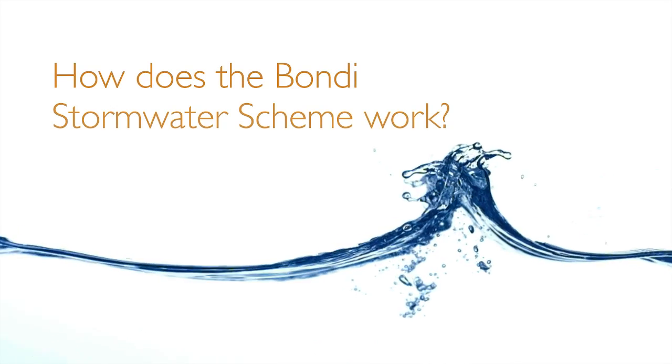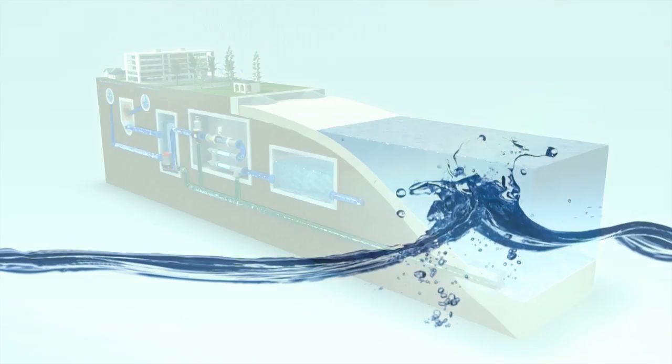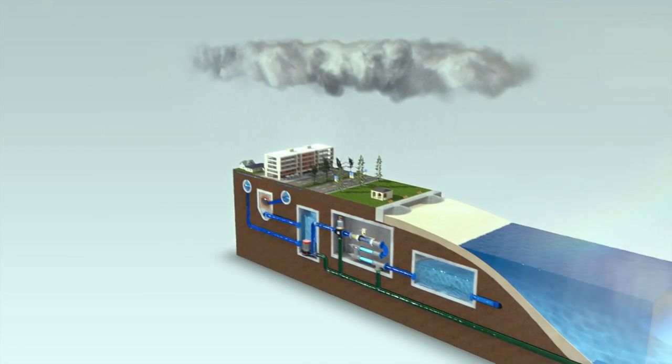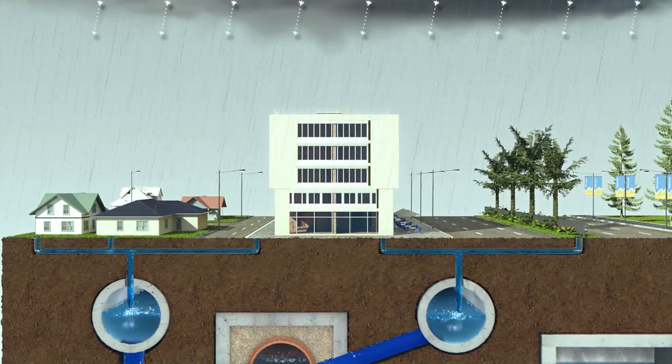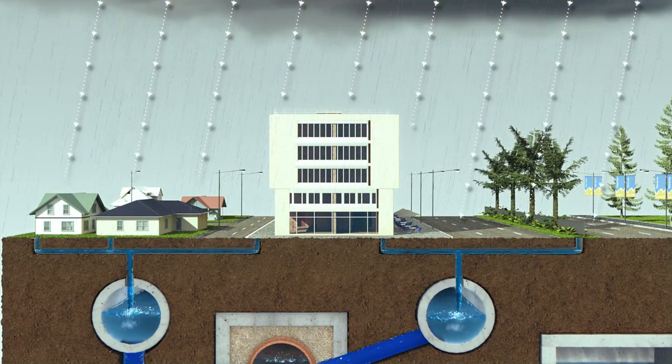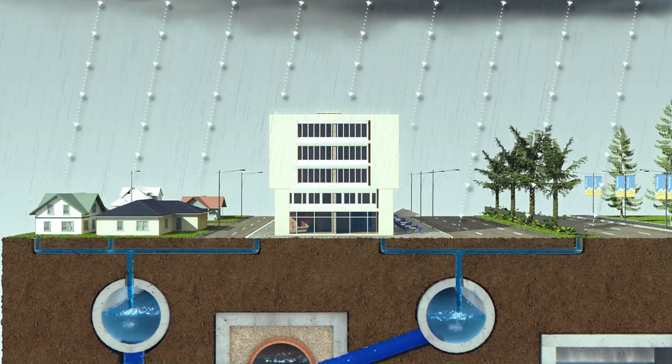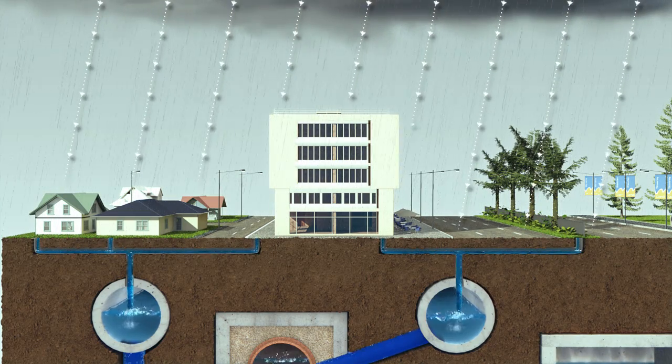How does the Bondi Stormwater Scheme work? When it rains, stormwater from our streets, homes and businesses flow into an underground drain network which ends up at the beach. The Bondi Stormwater Scheme collects this water for treatment and recycling.